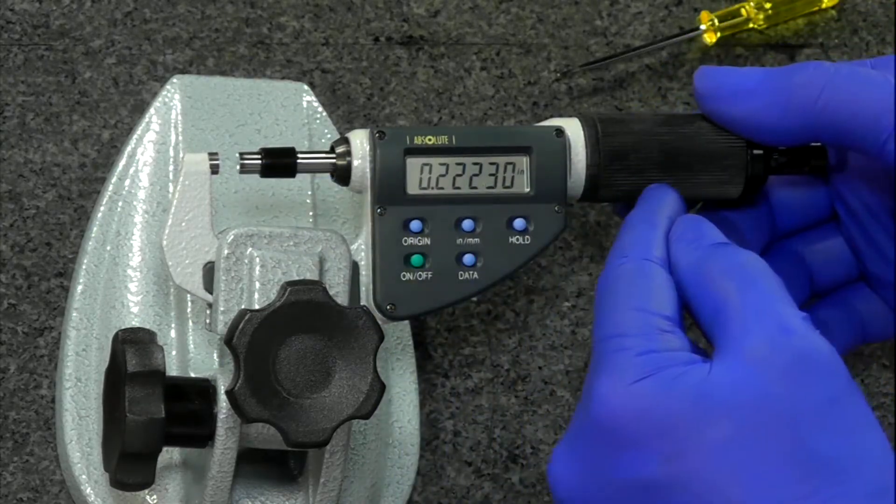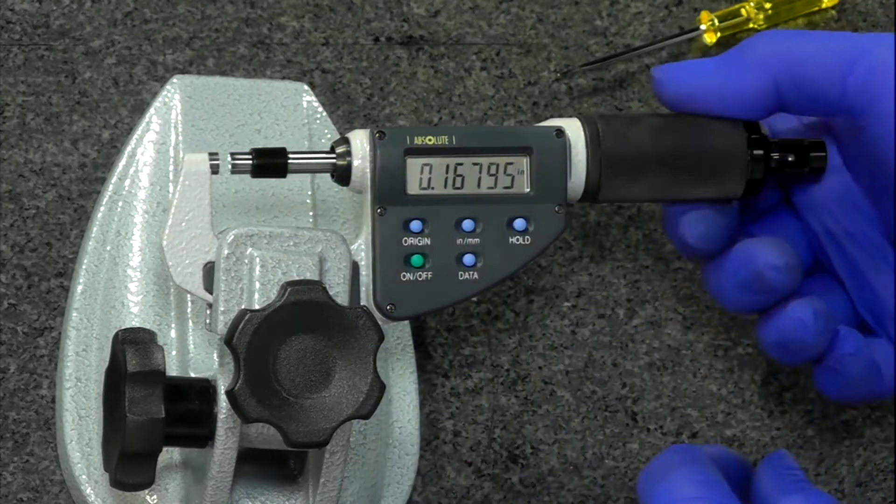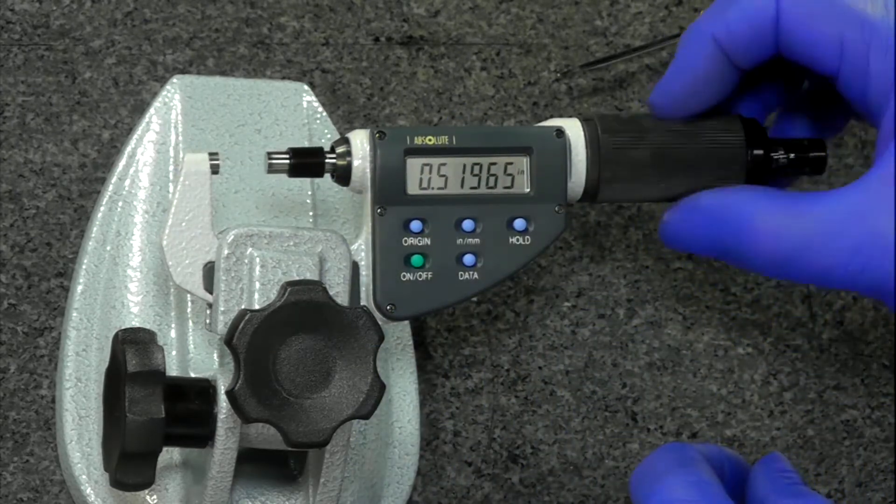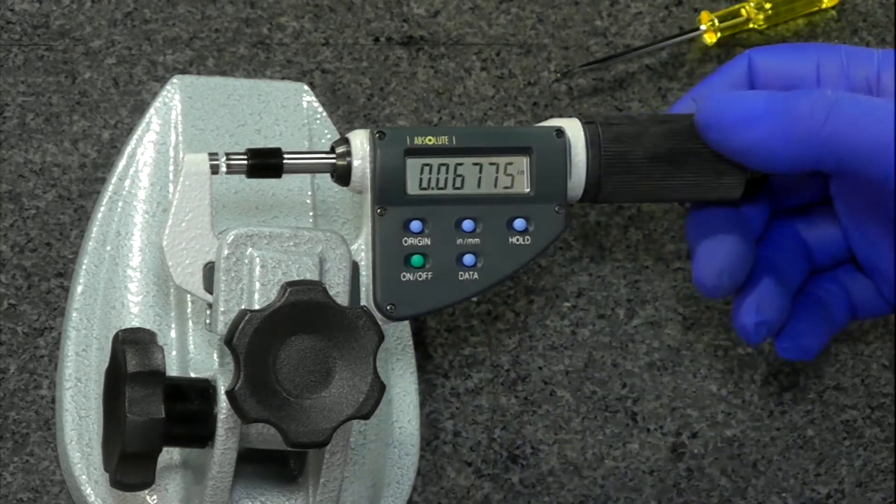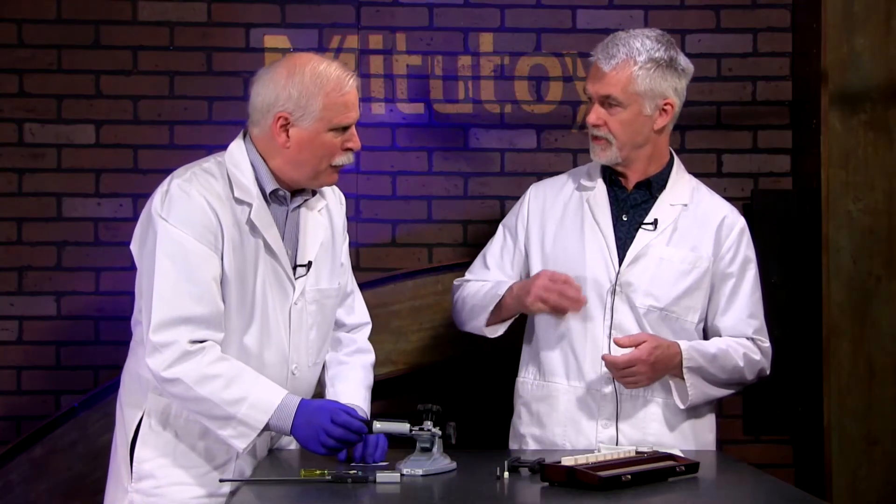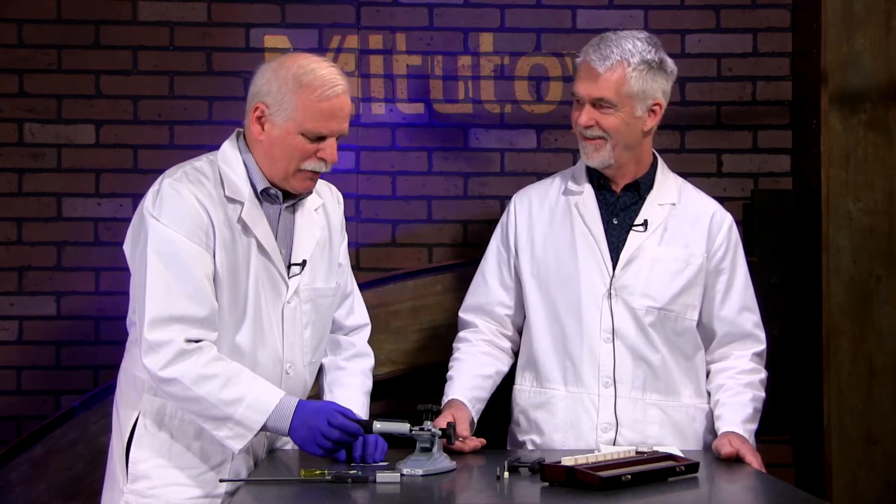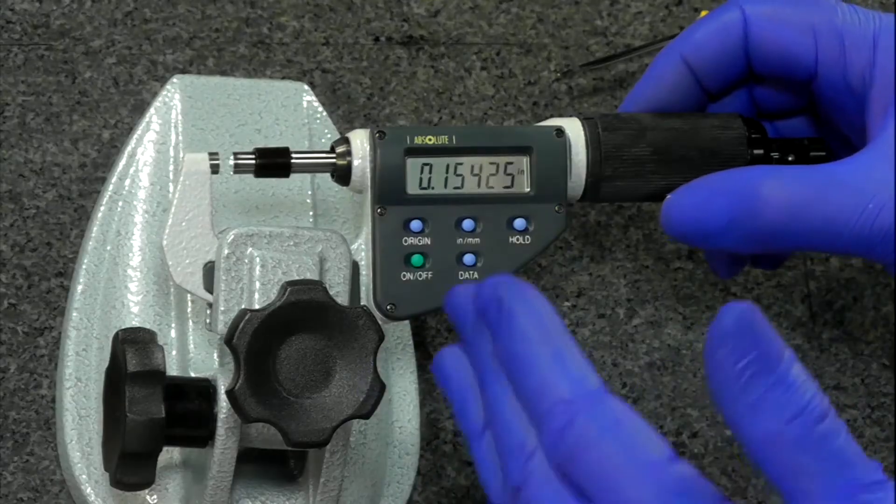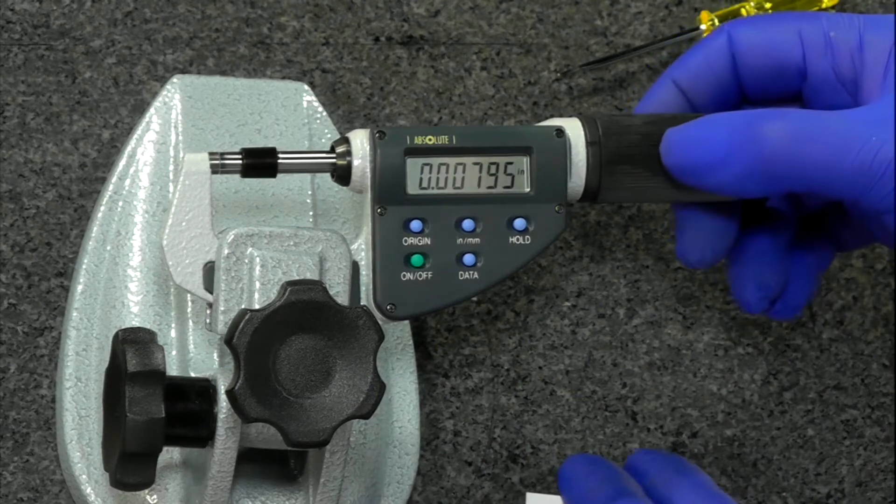Now this has the fast acting spindle where you just turn a little bit and it flies. They actually have done time studies on how much time it saves people when they're measuring different diameters to have this fast force. Each rotation is usually 25,000. So they have a ratio and this is a very high ratio, low ratio. So it really moves.